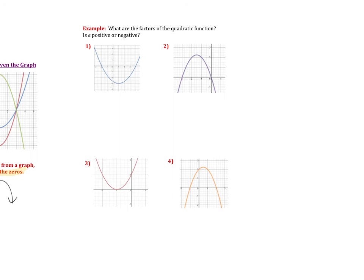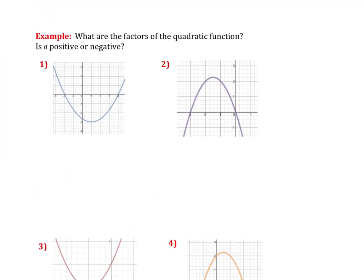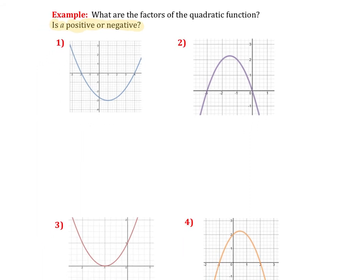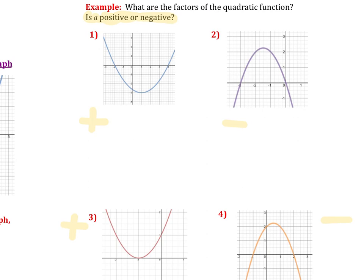Here it's asking us, what are the factors of the quadratic function? And is the a value positive or negative? So this is kind of nice. It's not actually asking us for the a value. It just wants to know positive or negative. So we can actually just look at these. If it's a smile, it's positive. If it's a frown, it's negative. So this one's going to have a positive a value, negative a value, positive a value, number four down here, negative a value. So let's get our factors out. This one, I've got negative 2 and positive 4. So I'd have the factors of x plus 2 and x minus 4. And since we said it was positive, I just leave this coefficient out front positive.